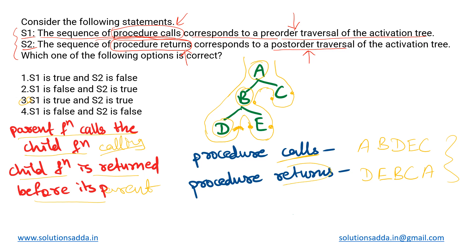If you look carefully, the calling order A, B, D, E, C is nothing but the pre-order traversal of this tree. And in the same way, the order in which they are returned corresponds to the post-order traversal of the given tree. That is what both statements were saying. So we see that both S1 and S2 are true, and we will go with the third option — both are correct.